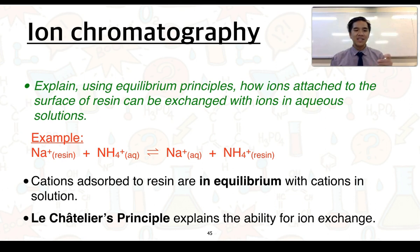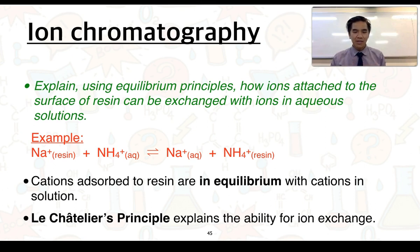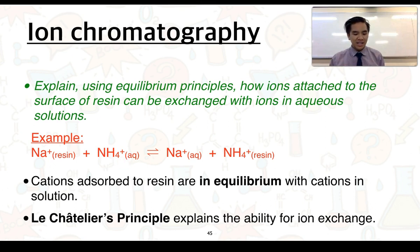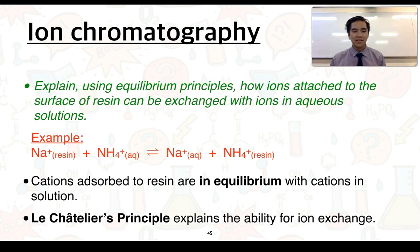We're now going to link into this point: explain using equilibrium principles how ions attached to the surface of resin can be exchanged with ions in aqueous solution. We've got sodium ions attached to the resin, ammonium ions in solution from your mixture. This reaction can result in sodium ions being removed from the resin and ammonium ions being adsorbed onto the resin itself. We say that the cations adsorbed to the resin are in equilibrium with the cations in solution.